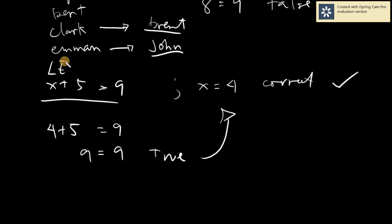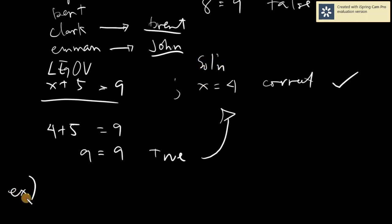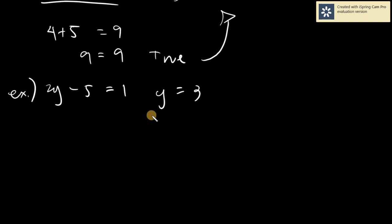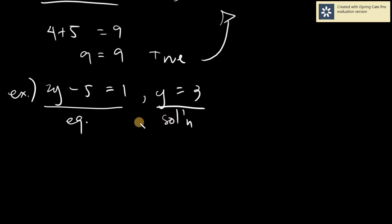This is the only solution because if we use any number other than 4, we will definitely not get 9. So there is only one solution for our linear equation in one variable. This is your linear equation in one variable, and this is your solution.